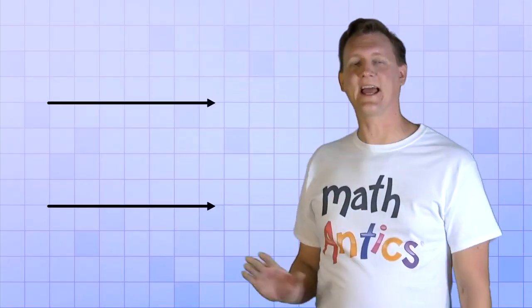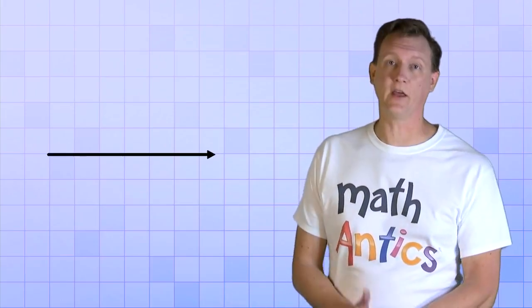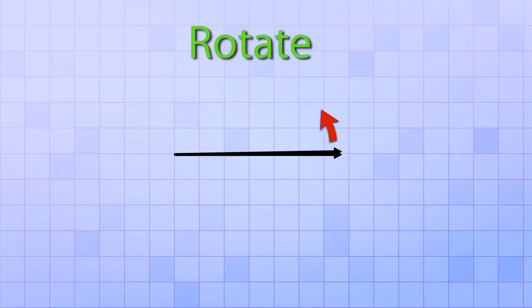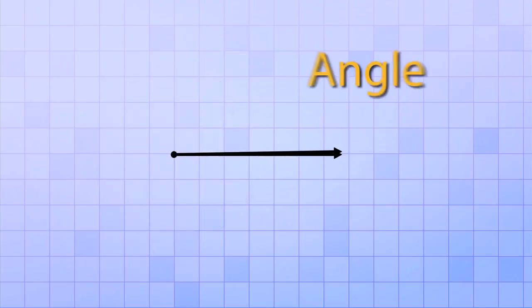To see how we use degrees to measure angles, let's get two rays that point in exactly the same direction. Then, let's put one ray directly on top of the other one, so it looks like there's only one ray there, even though there's really two. Now, let's take the ray on top and rotate it just a tiny amount counter-clockwise. This point on the ray will be our axis of rotation. It's just like the point at the center of a clock that stays stationary while the hands rotate around it. Our rays now form an angle that measures 1 degree. And as you can see, 1 degree is a really small angle.